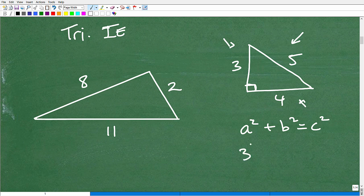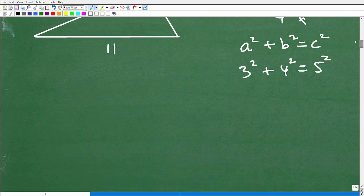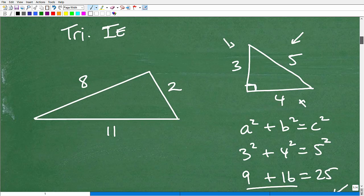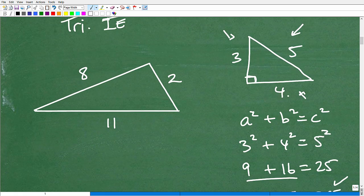So just to prove that this in fact is a real triangle. So three squared plus four squared is equal to five squared. Let's just check that real quick. Okay. That's going to be nine plus 16 is the same as 25. And nine plus 16, of course, is 25. So 25 is equal to 25. So in fact, this is a real triangle. Okay. Real values, what I'm saying.